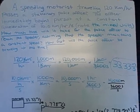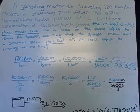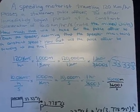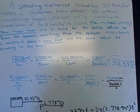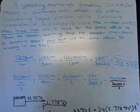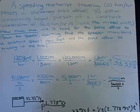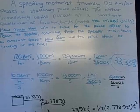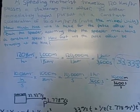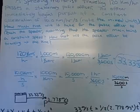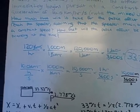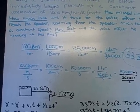So the question is, a speeding motorist traveling 120 kilometers per hour passes a stationary police officer. The officer immediately begins pursuit at a constant acceleration of 10 kilometers per hour per second. Note the mixed units. How much time will it take for the police officer to reach the speeder, assuming that the speeder maintains a constant speed? How fast will the police officer be traveling at this time?